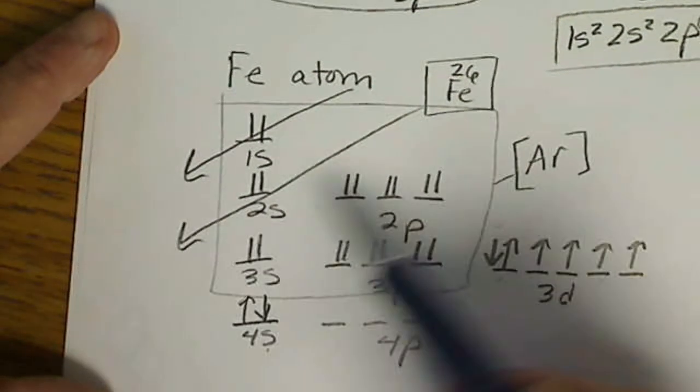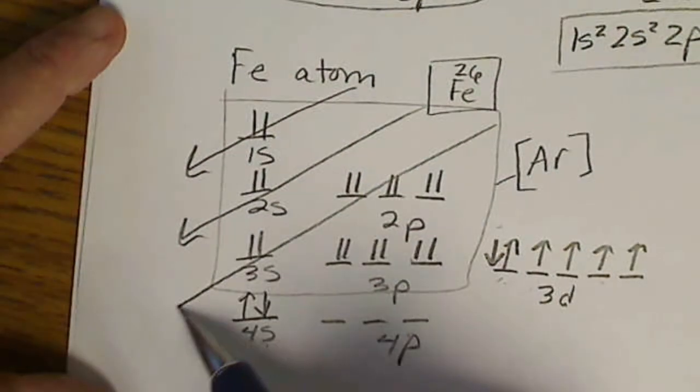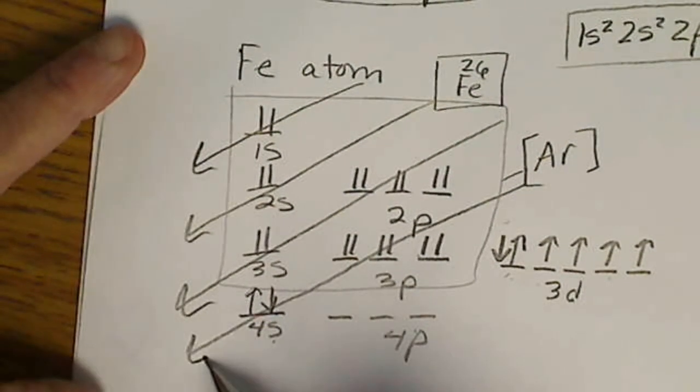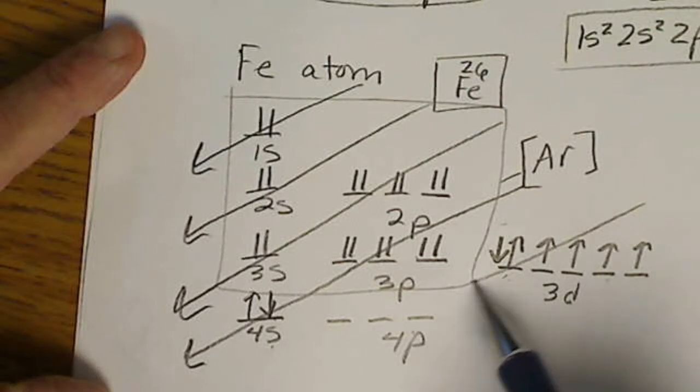The order of filling: we start at 1s, fill 2s, then 2p, then 3s, then 3p, then 4s. Then we come back and fill the d orbitals.